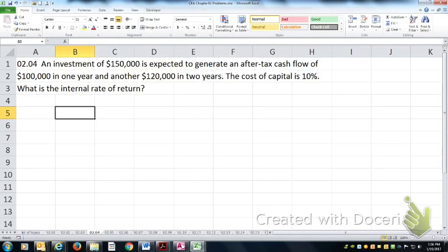An investment of $150,000 at time zero is expected to generate after-tax cash flow of $100,000 in year one and another $120,000 in year two. So a $150,000 investment generates $220,000 in return spaced over two years.